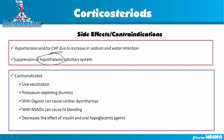Corticosteroids are contraindicated with live vaccination because the decreased immune system means instead of the body creating antibodies for the vaccine, it will cause the actual disease. They are also problematic with potassium-depleting diuretics because this medication causes hypernatremia — high sodium — and hypokalemia. You should not give this medication with a potassium-depleting diuretic because it will cause even more hypokalemia.